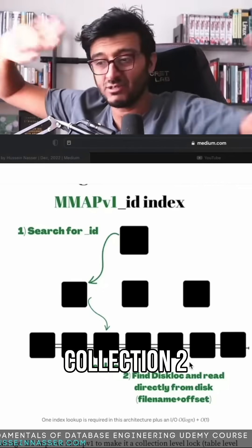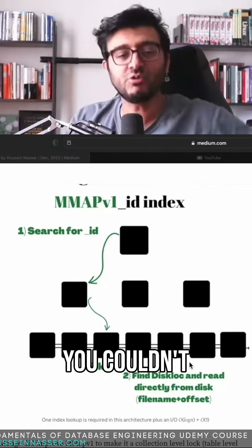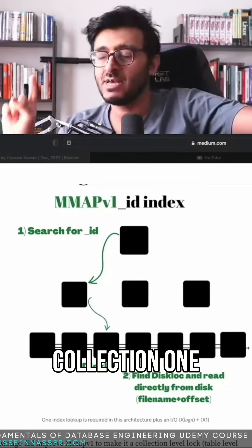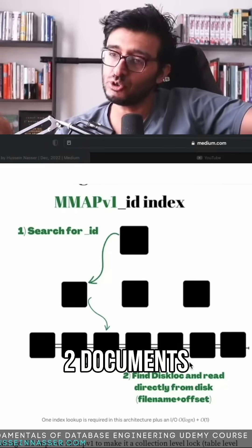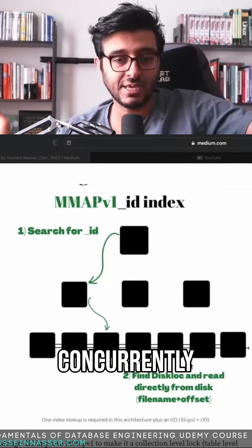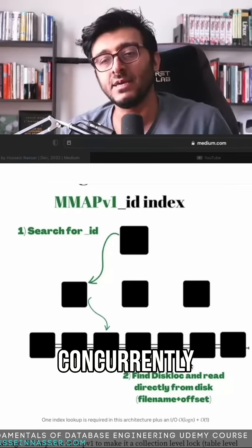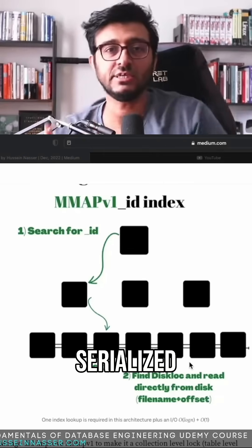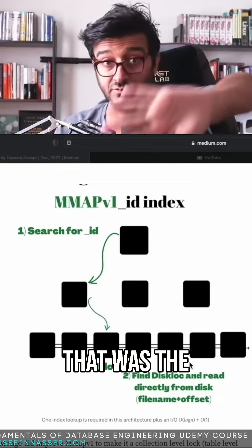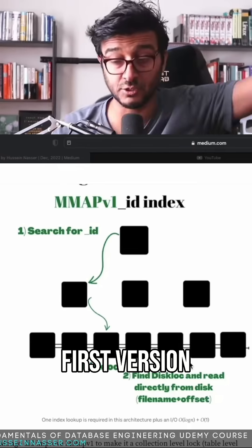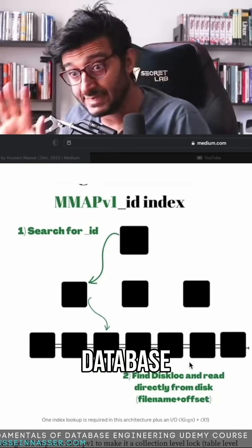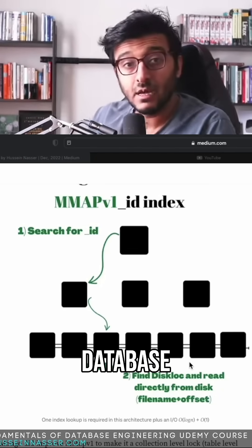If you have collection one and collection two, you couldn't even change their documents concurrently — they are serialized. There is one global lock. That was the first version of MongoDB, because it used a single database lock.